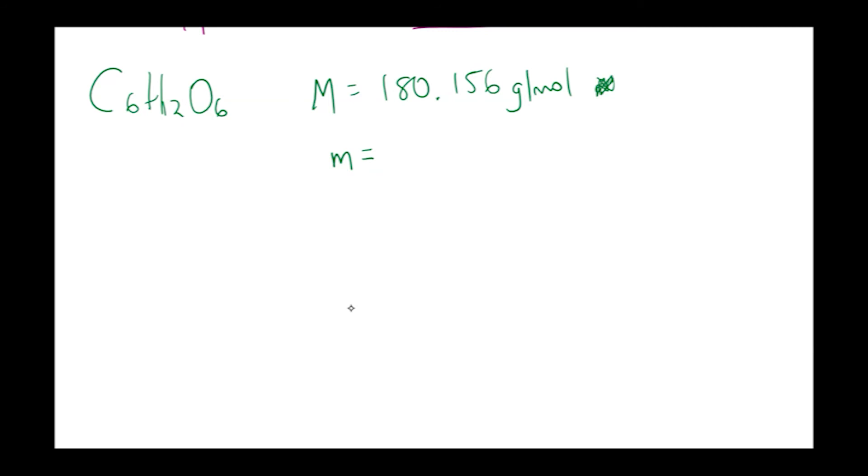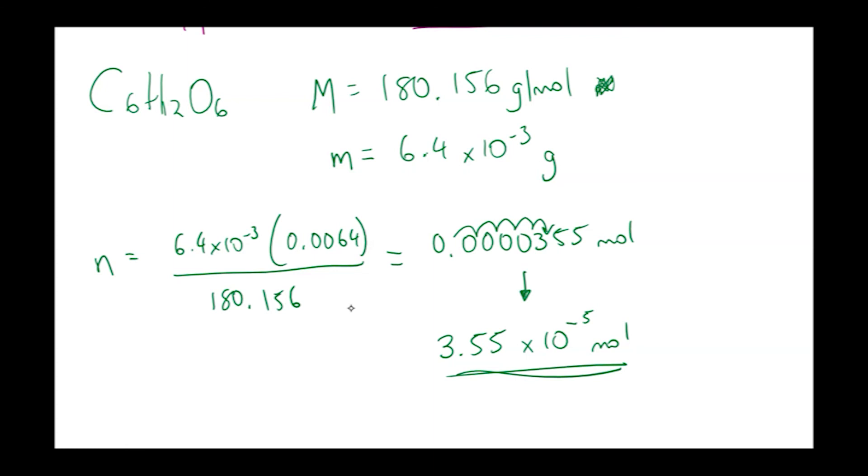We're going to calculate the number of moles in 6.4 times 10 to the minus 3 grams. This time we're using a very small amount, which is very common in chemistry. Number of moles equals 6.4 times 10 to the minus 3—that's also 0.0064—over 180.156, which is the molar mass. Work that out and you get this value: 0.0000355 moles. But we don't normally write that in chemistry. We will put it into scientific notation, so it would be 3.55 times 10 to the negative 5 moles.